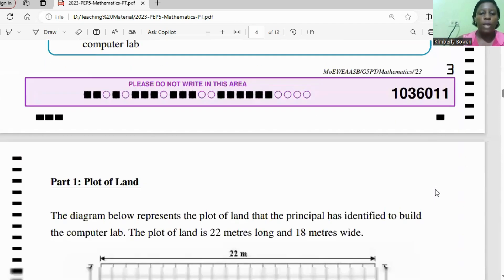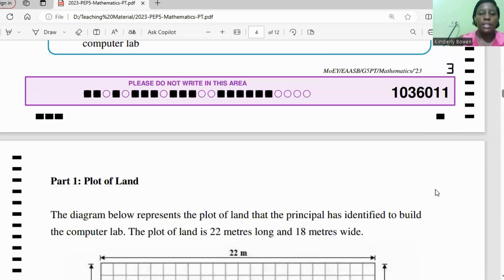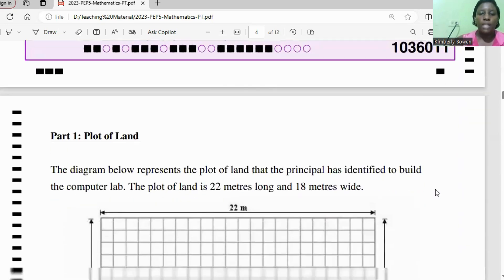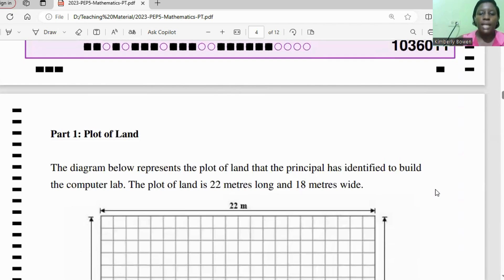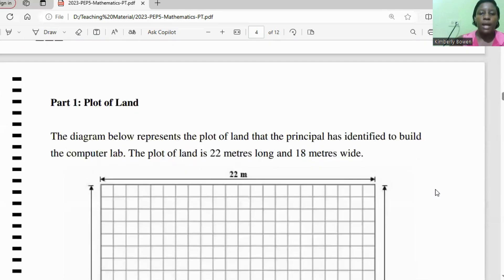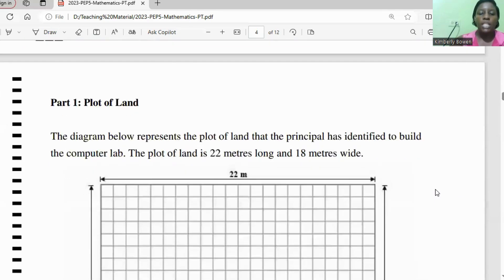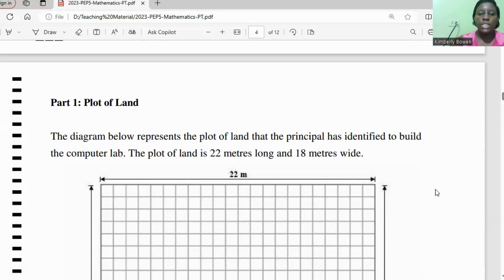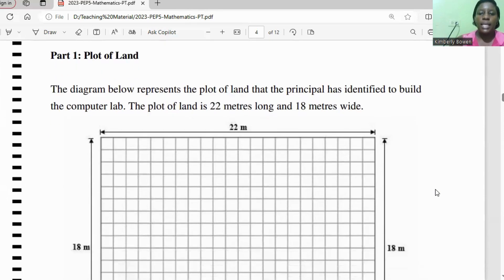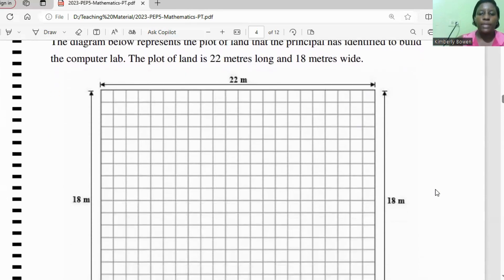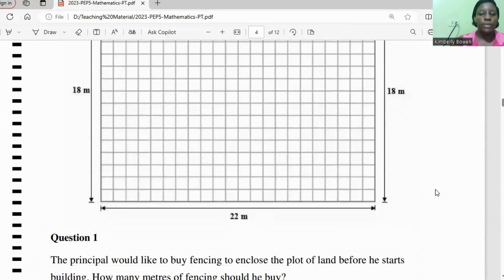Part one, plot of land. The diagram below represents the plot of land that the principal has identified to build a computer lab. The plot of land is 22 meters long and 18 meters wide. And we're seeing the plot of land there on the grid.